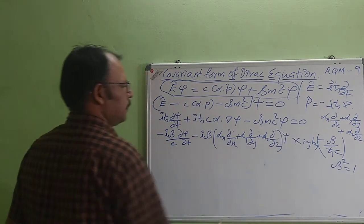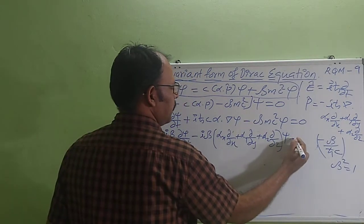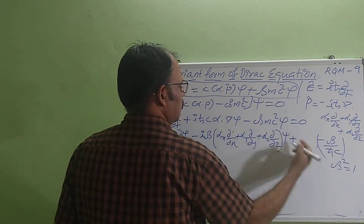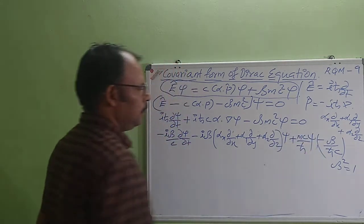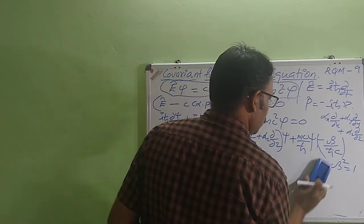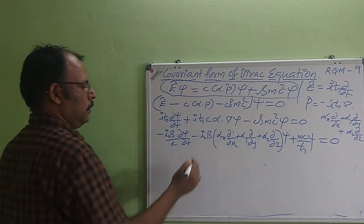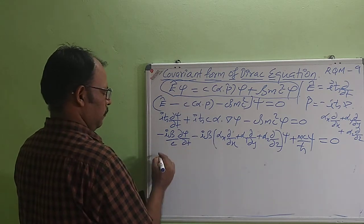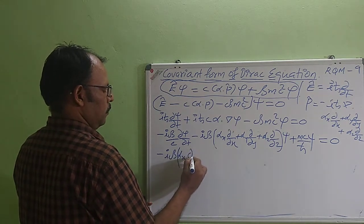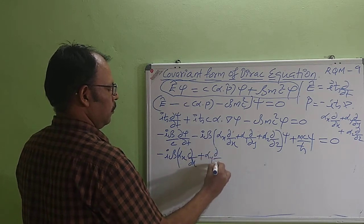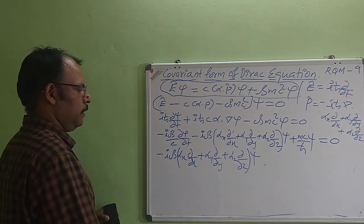Operating on ψ. For the last term, multiplying by −β/ℏc gives +β². Since β² = 1, and dividing by ℏc causes c to cancel, we get +mc/ℏ · ψ = 0. Writing this out: −iβ·αx ∂/∂x + αy ∂/∂y + αz ∂/∂z operating on ψ, plus mc/ℏ · ψ = 0.